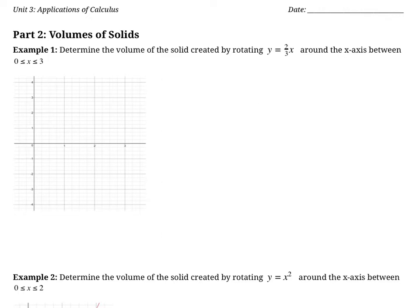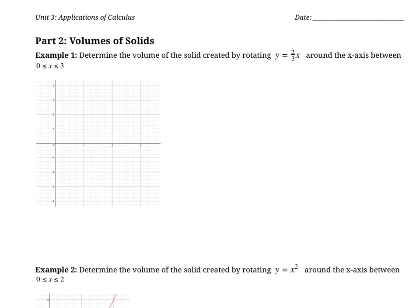This first question says: determine the volume of the solid created by rotating y equals 2/3 x around the x-axis. So first, let's do a quick sketch of 2/3 x. It's going to cross the x-axis, and following the slope — rise of 2, run of 3 — we know it also goes through that point. So we can draw a straight line representing that.